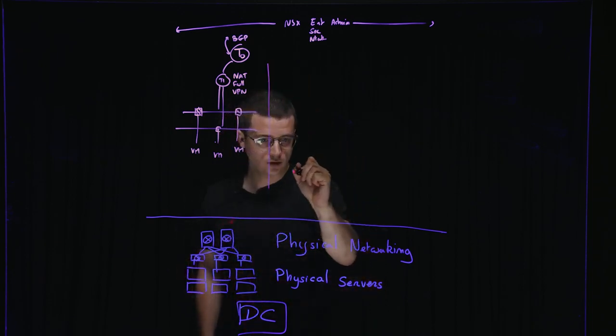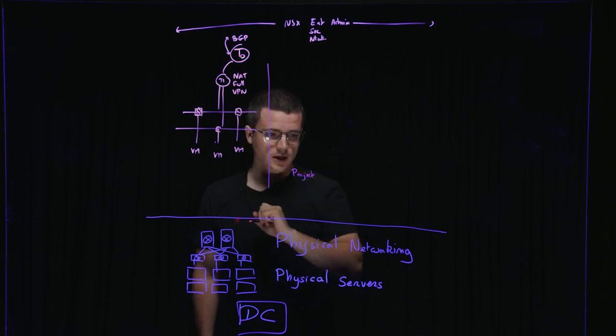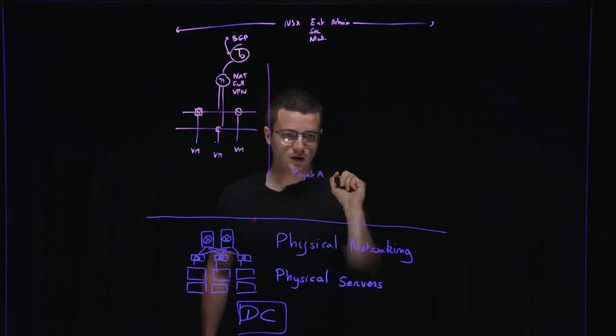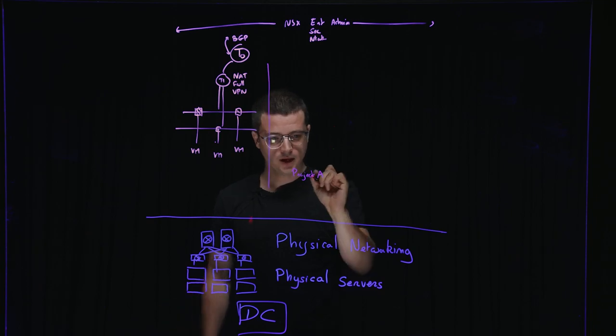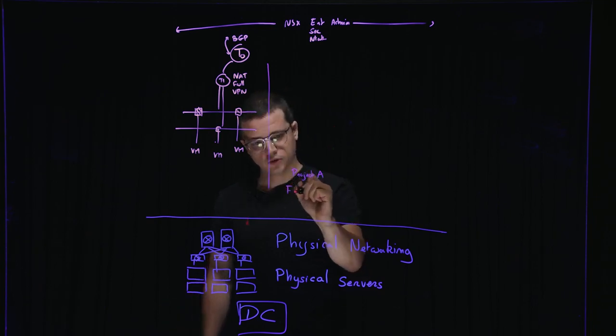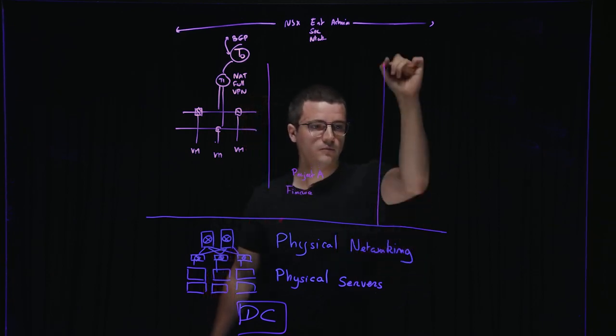So a project is a context, a tenant, and we can create, for instance, a project for each business line. So let's take two business lines, a business line finance and a business line marketing. So we create project A for finance and project B for marketing.